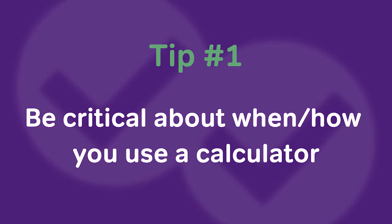Tip number one is to be critical about when and how you use a calculator. An important thing to know about the ACT is that no question is designed to require the use of a calculator. In fact, using a calculator on many problems is going to slow you down or cause you to make mistakes. So when you reach a problem where you have to do a calculation, don't reach for a calculator by default. Figure out if that's actually going to help you go faster or make it more likely for you to do a correct calculation.